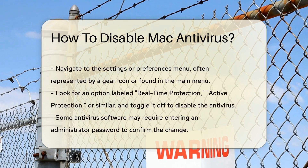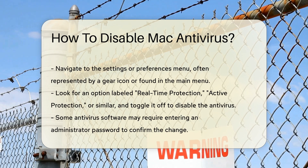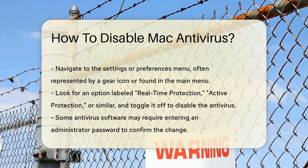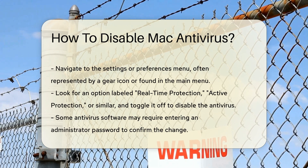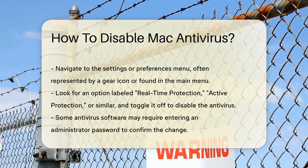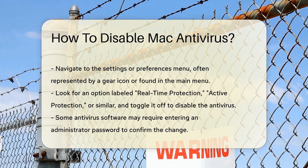Within the settings or preferences menu, you should find an option to disable or turn off the antivirus protection. This may be labeled as real-time protection, active protection, or something similar. Toggle this option off to disable the antivirus.